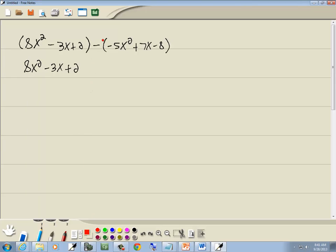Now, remember, if you have a negative in front of your parentheses, it flips the sign of everything inside. So it flips the sign of the negative 5x², the 7x, and the negative 8. So the negative 5x² becomes a positive 5x². The positive 7x becomes a negative 7x. And negative 8 becomes a positive 8.